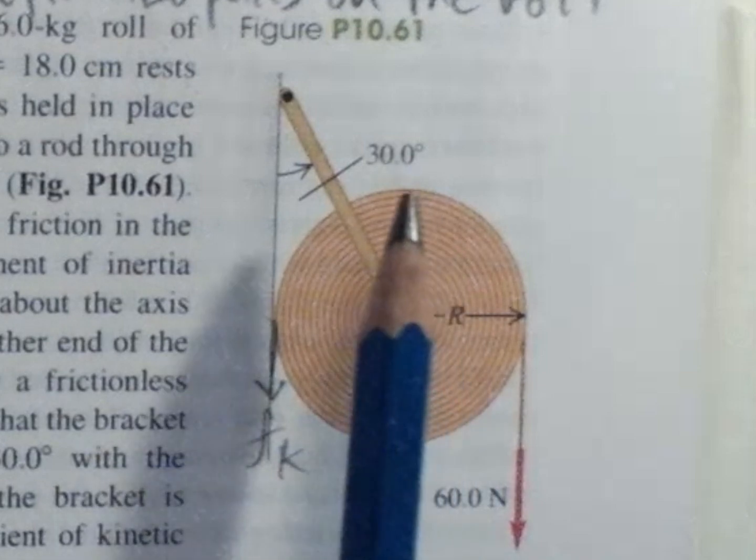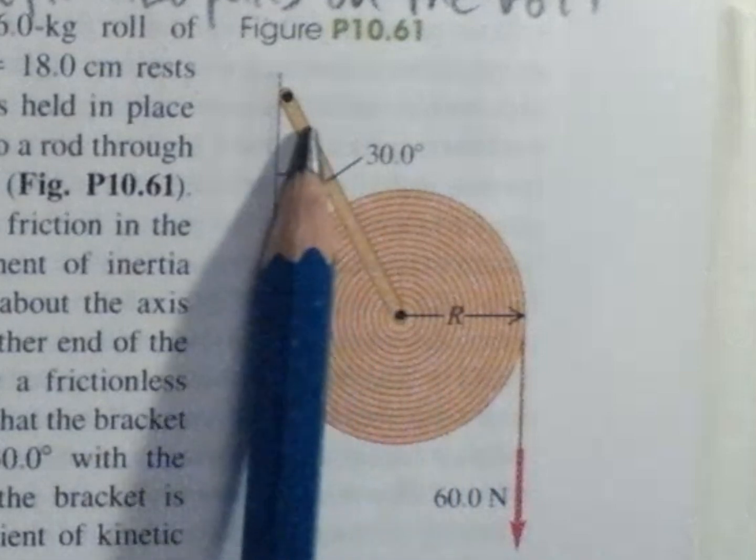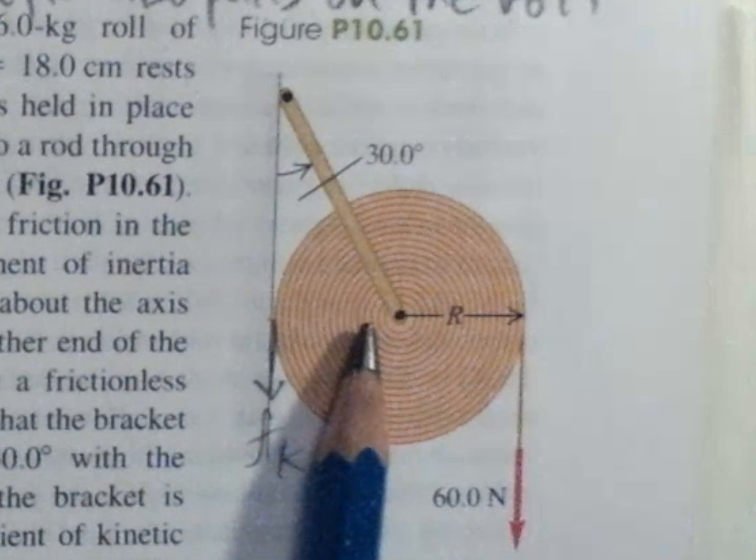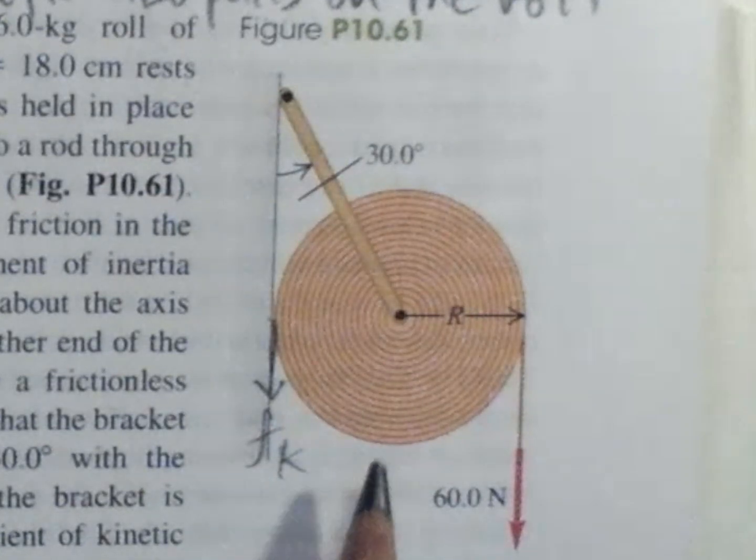The problem asks us to determine the tension force on the bracket which holds this roll of paper, and also the angular acceleration of this roll of paper.